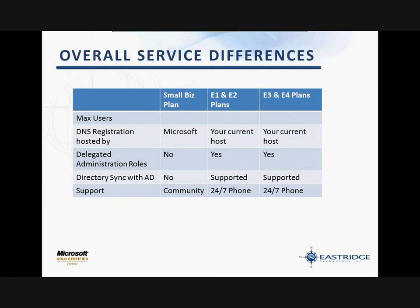Breaking it down between enterprise and small business plans — E1, E2, E3, and E4 are all enterprise plans. The big differentiation is if you go with a small business plan, you're basically going to hand over all of your DNS registration directly to Microsoft. With an enterprise plan, you go to your GoDaddy or Network Solutions account and point specific email or web servers to Microsoft locations. The small business plan also doesn't let you delegate different administrative roles in your organization — it assumes one person is in charge of everything — and there's no directory synchronization. Support is purely community-based with no 24x7 phone support.